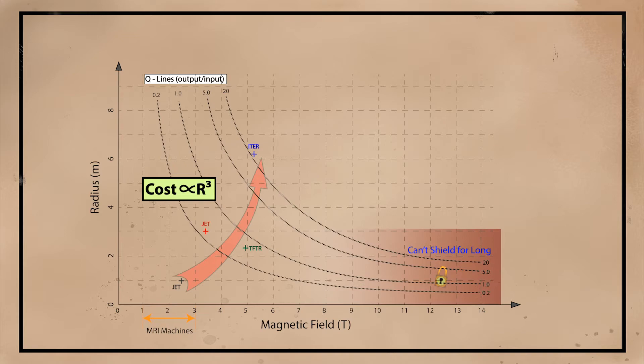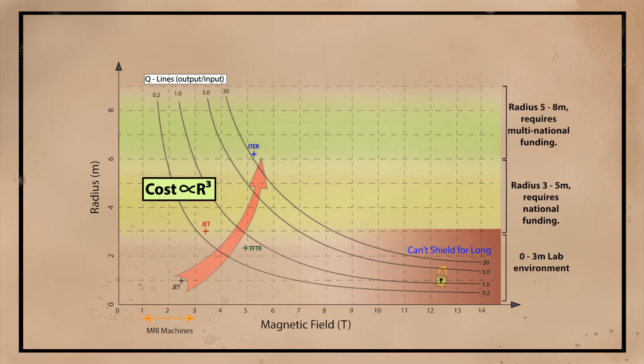Unfortunately, there is still a third part of the graph that needs to be unlocked. This region is not accessible yet because with the reduction in size, it becomes hard to shield from the bombardment of high-energy neutrons.